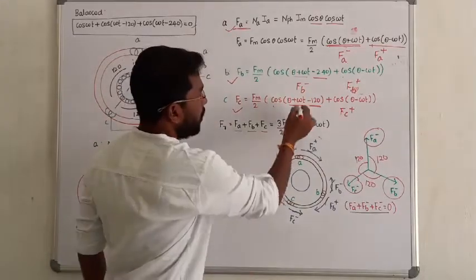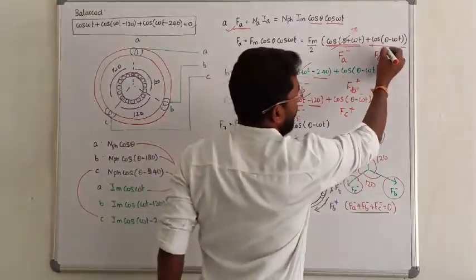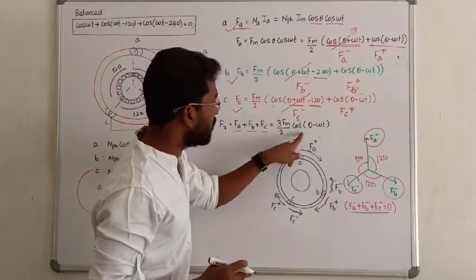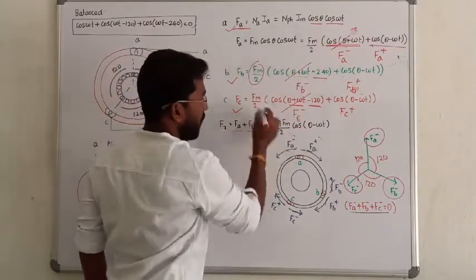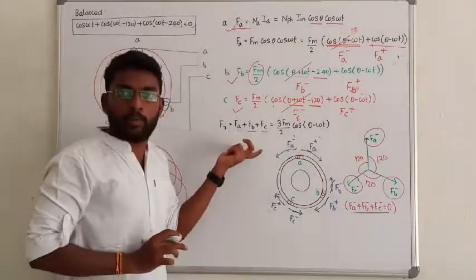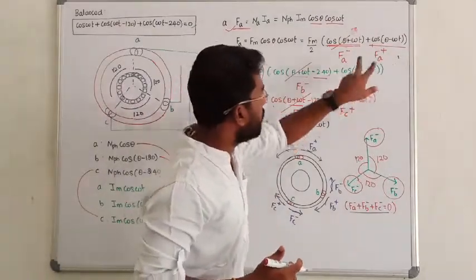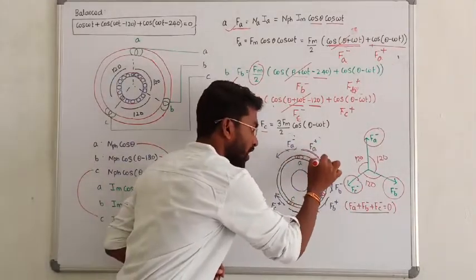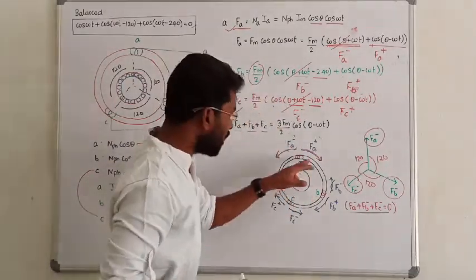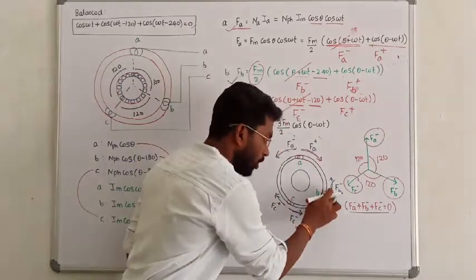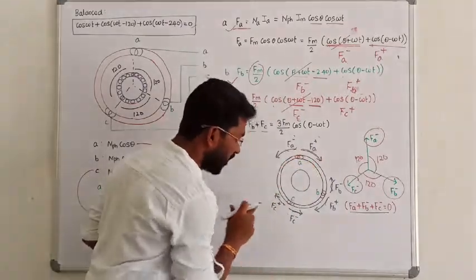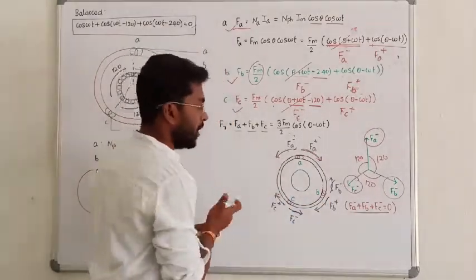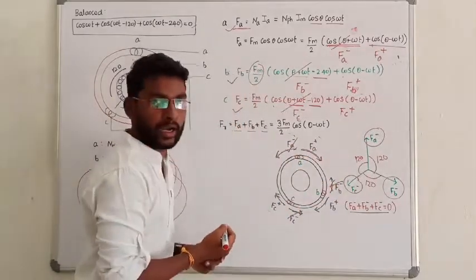Now if we add the three phases, we have three quantities of the forward-rotating component. We have cos(θ − ωt) + cos(θ − ωt) + cos(θ − ωt). Over each phase, there are two MMFs — one positive and one negative. Over each phase, two forces develop: one force in the forward direction and one in the reverse direction, rotating in opposite directions with equal magnitude. F_A minus, F_C minus, F_B minus — the three negative MMFs are balanced, and the result is zero.